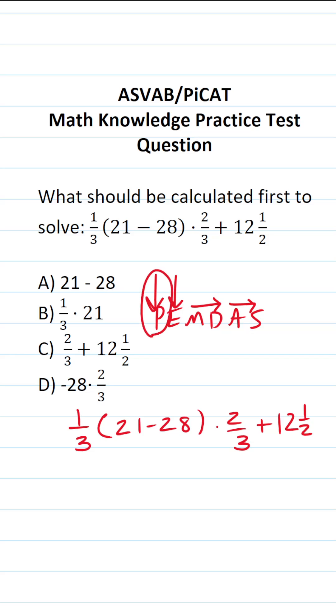Well, in this case, do we have something in parentheses? We do. We have 21 minus 28. So the very first calculation we're going to perform is A, 21 minus 28.